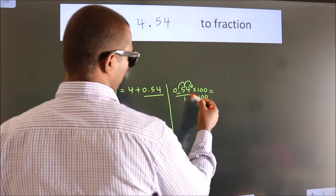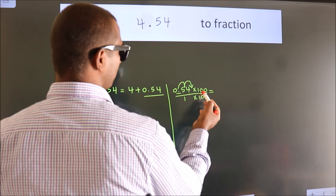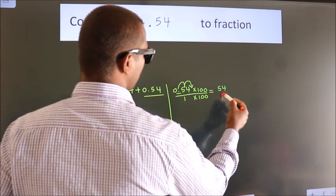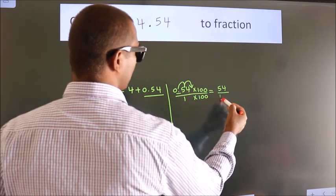Next, 0.54 times 100 is 54. 1 times 100 is 100.